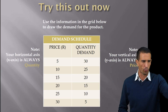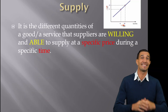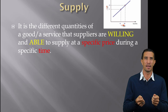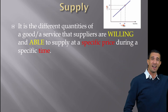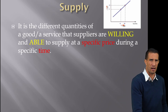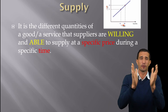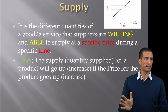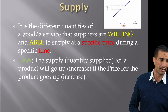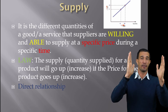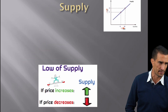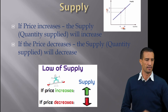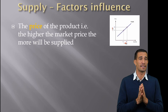Supply is the total opposite of demand. The business asks how much it will supply, focused on making money — so it wants to supply more at a higher price for higher profit, and less at a lower price because it's not profitable. Supply is the different quantities of a good or service that suppliers are willing and able to supply at a specific price during a specific time. The law of supply says quantity supplied increases if price increases — that's a direct relationship.